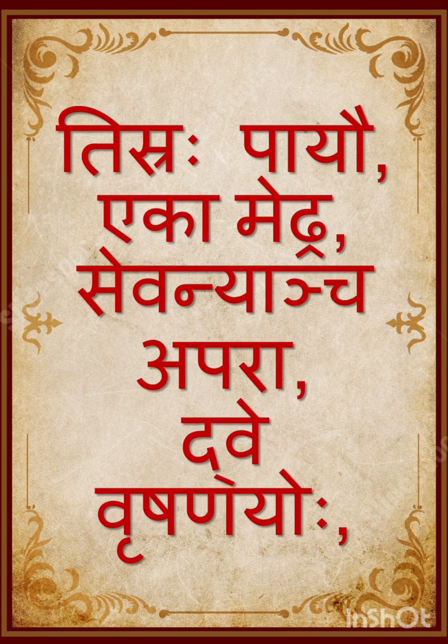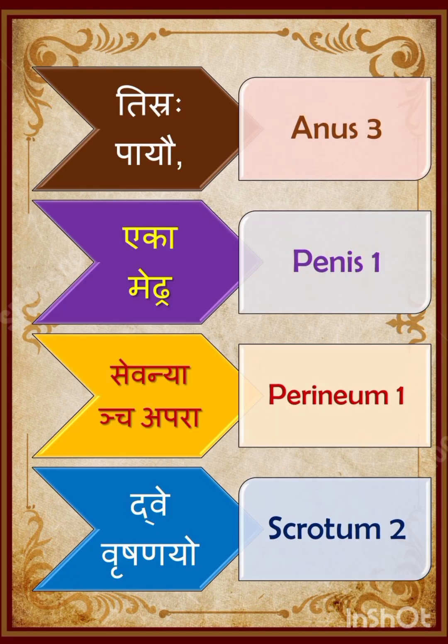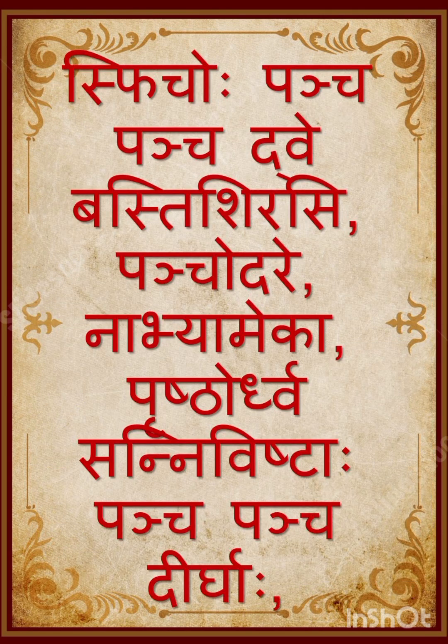Tisraha Payo — Anus has 3 muscles. Ega Metra — Penis 1. Seva Nyacha Abara — Perineum 1. Dwe Vrishana Yoho — Scrotum has 2. So the counts are: Payu 3, Metra 1, Perineum 1, Vrishana 2.